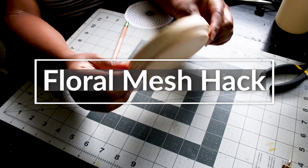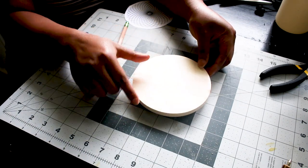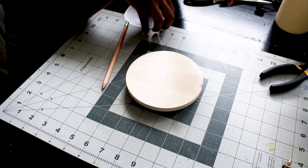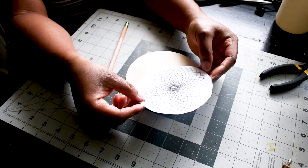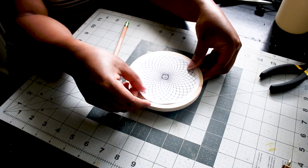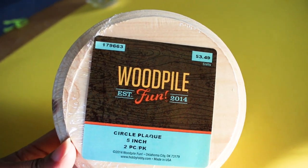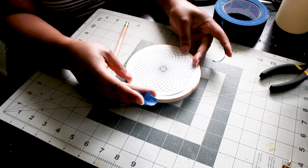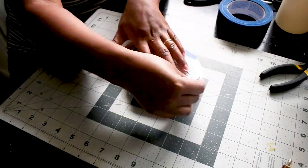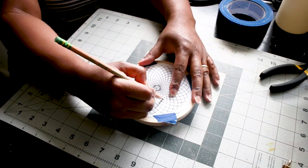For this next project, I'm using the wood burning tool once again, and the idea here is to make this wood round look like the center of a sunflower. This round came in a pack of two from Hobby Lobby, and I printed this image from Google once again and did the same tracing method.